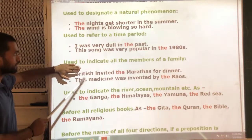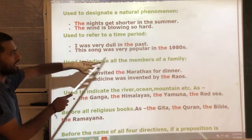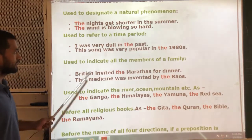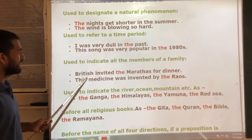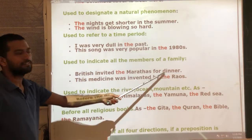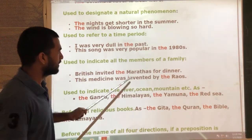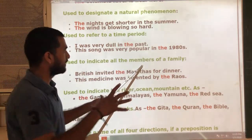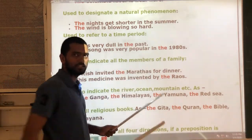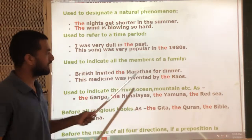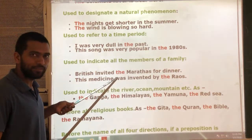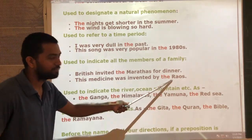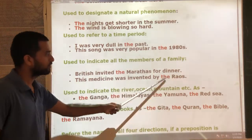Fourth rule: use 'the' to indicate all the members of a family or group. For example: 'The British invited the Marathas for dinner' — here 'Marathas' indicates all the members of that group. When we refer to all members of a family or community, 'the' is used. Another example: 'This medicine was invented by the Raabs' — meaning the family of Raabs.